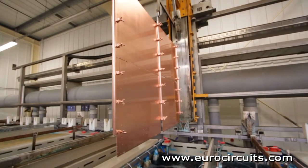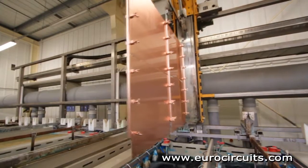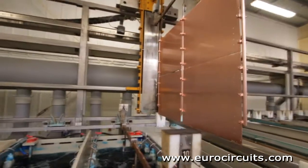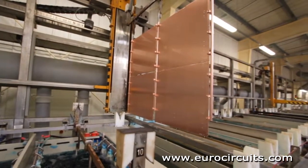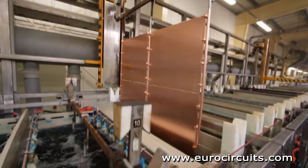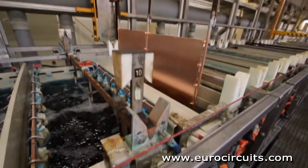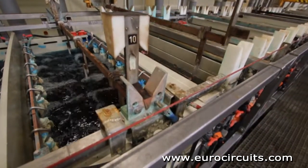This thickness must be electroplated, but the walls of the holes are non-conductive glass cloth and resin. So the first step is to deposit a conductive layer over the hole walls. We use electroless copper.